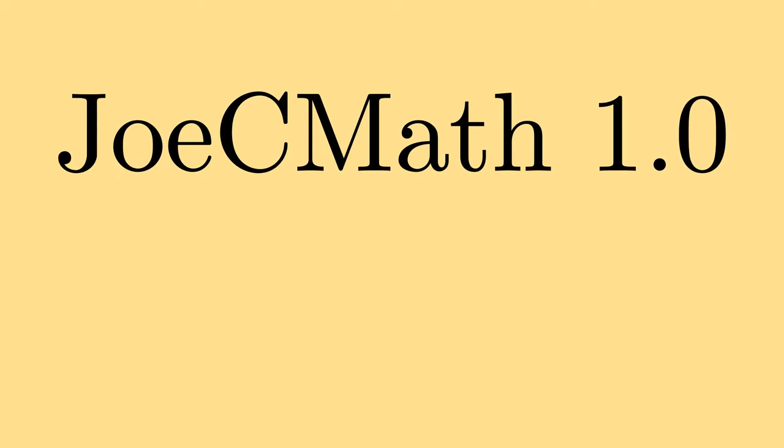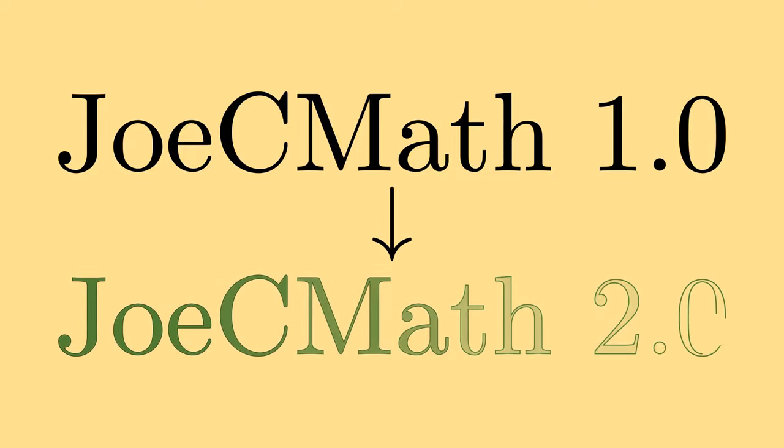Every time I hit one of these powers of 10 milestones for subscribers, I think it's important to look at how I can potentially better my content. In other words, how can I upgrade from JoeCMath 1.0 to JoeCMath 2.0?